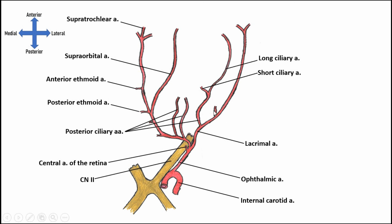These muscular branches have an additional detail: sometimes they carry substantial blood supply through the muscle and tendon, actually reaching the anterior part of the globe of the eye. When that happens, we call these the anterior ciliary arteries. They supply blood into the network formed by the posterior ciliary, short ciliary, and long ciliary arteries that supply the structures of the globe of the eye itself.